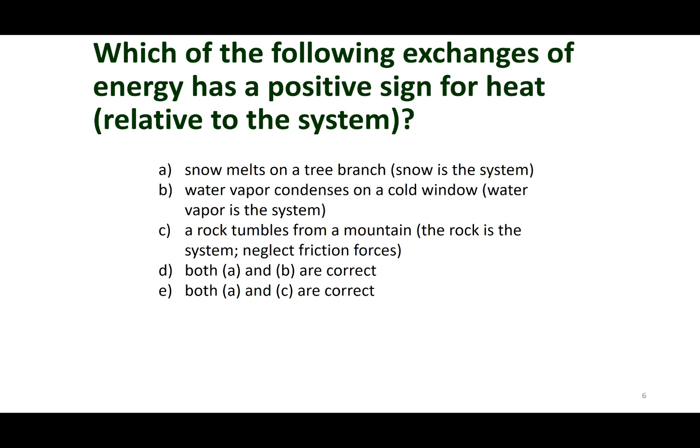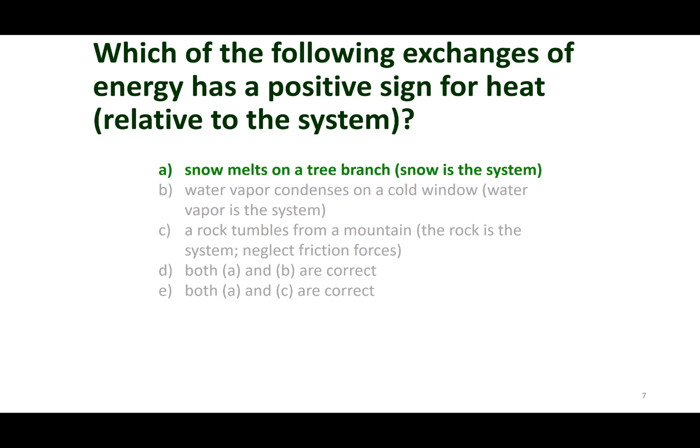Which of the following has a positive sign for heat? The option you should choose is the first one, where the branch is giving up its heat to melt the snow. To get solid water into liquid water, I have to gain heat or gain thermal energy — so this is the only one that does this.